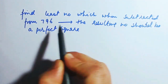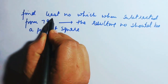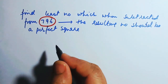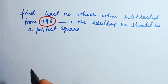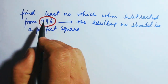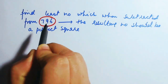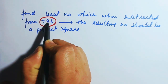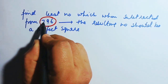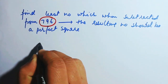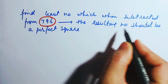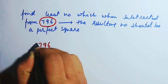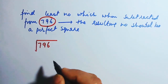Find the least number which when subtracted from 796. This clearly indicates that 796 is not a perfect square. So when it is not a square number, let us see — find the least number which when subtracted. When you subtract that part, the square number will naturally be smaller than this. Let us first see whether 796 is a square number or not.